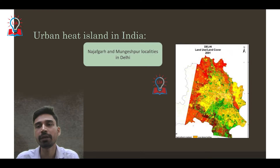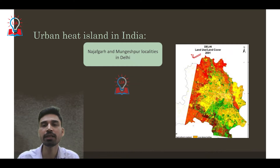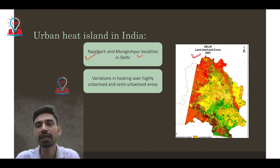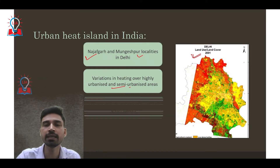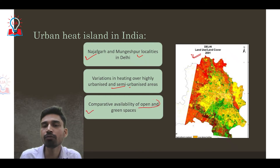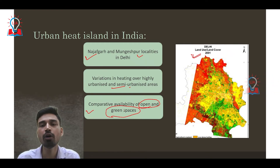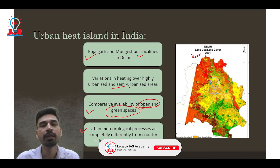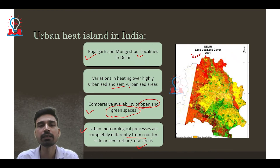Looking at the urban heat island in the context of India, this map of Delhi shows red regions as higher temperature areas and greener regions as cooler. The Najafgarh and Mungeshpur localities in Delhi are witnessing higher temperatures compared to their surroundings, believed to be due to variations in heating over highly urbanized versus semi-urbanized areas. Areas with open and green spaces show lower temperatures, while those with less availability of green and open spaces show higher temperatures, as urban meteorological processes act completely differently from rural or semi-urban areas.